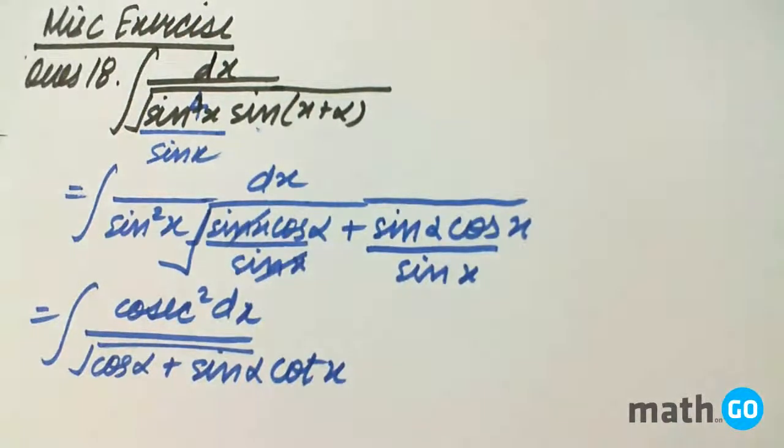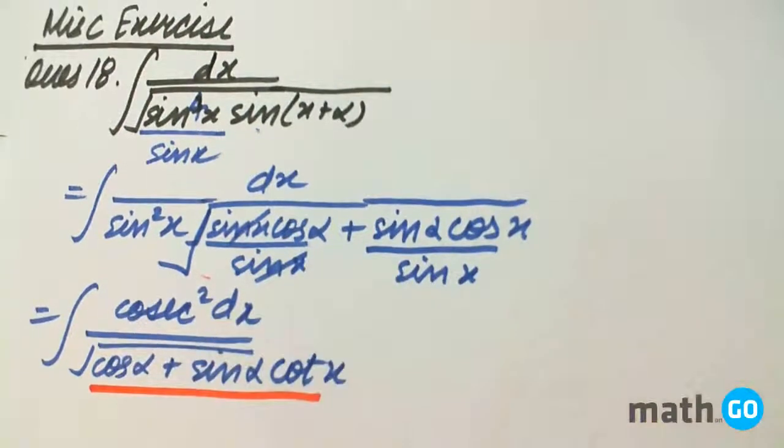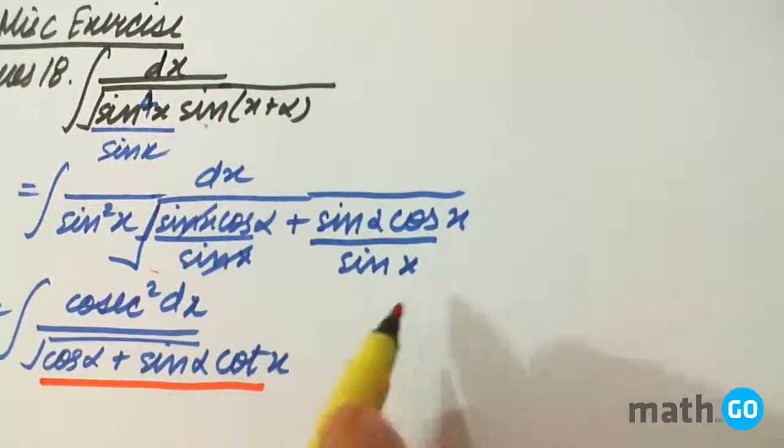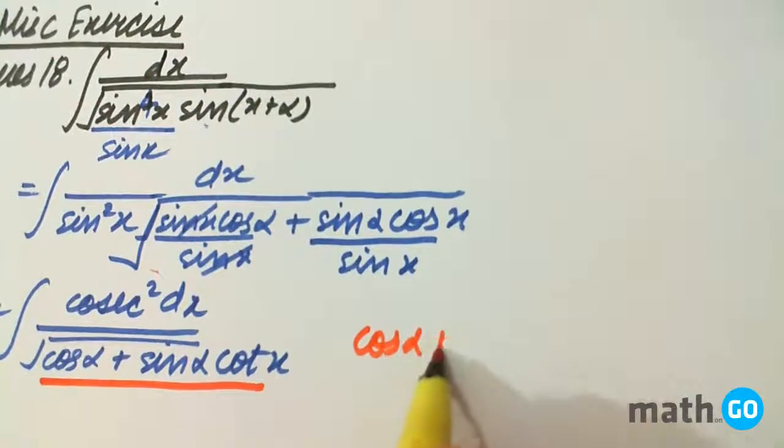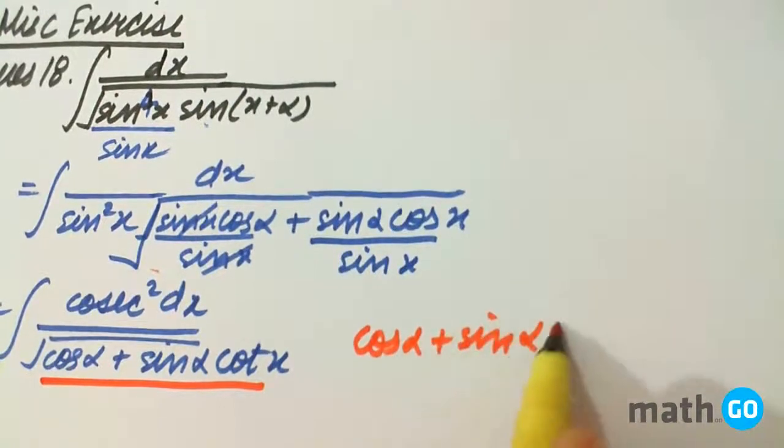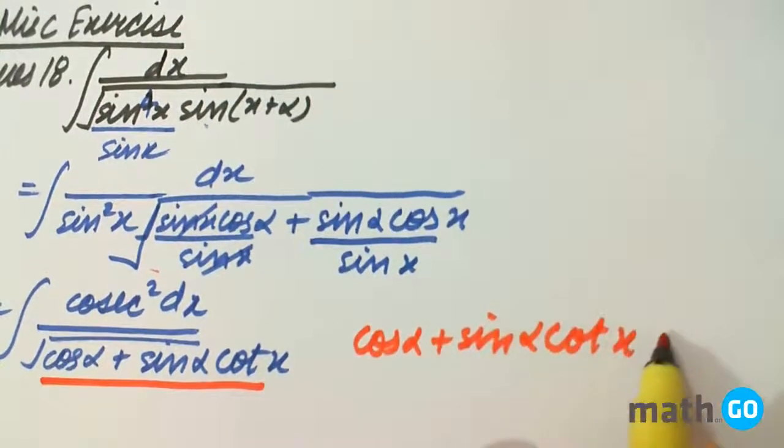Now it is clearly visible that if we take this expression t then this will be its derivative partially. Cos alpha plus sin alpha cot x equals to t.